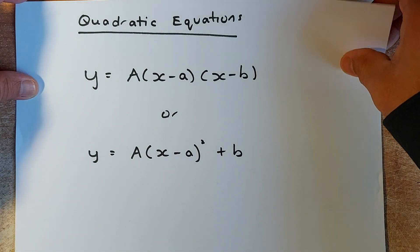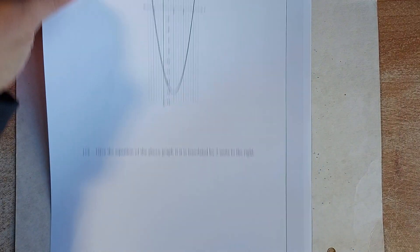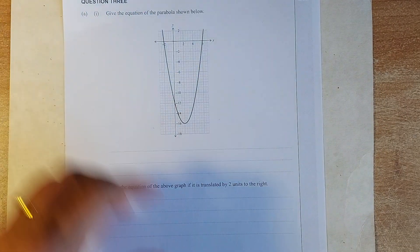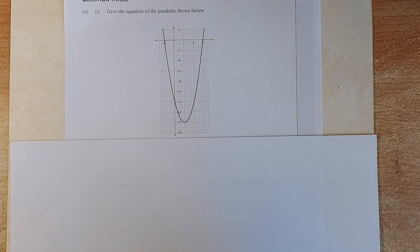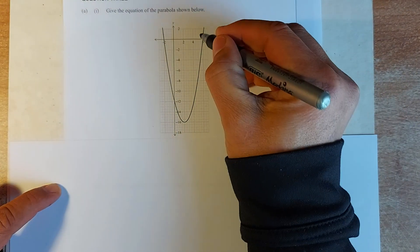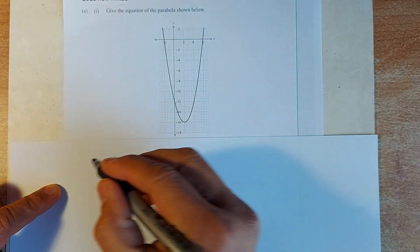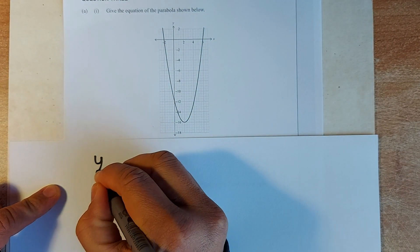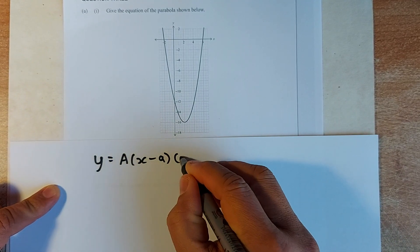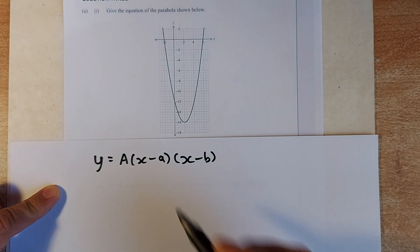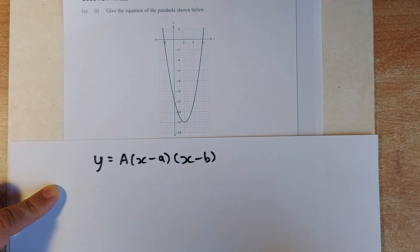We shall look at the 2017 exam first. We shall look at this graph, finding the equation of that graph. If you want to find the equation of that graph, it's very simple. We're doing the factorized form. The general equation is y equals to a times (x minus a) times (x minus b).